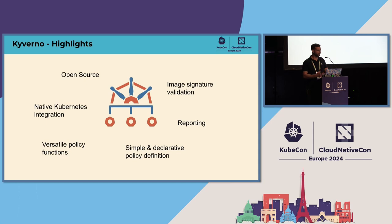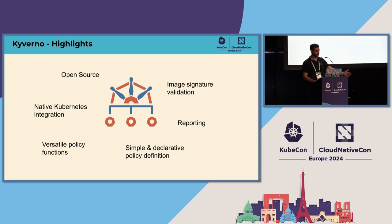Kyverno also has the possibility to do image signature verification. It has rich reporting functionality with a user interface showing which policy validations are passing and which are failing, and you can expose Prometheus metrics. Last but not least, there is a huge community — already 5,000 stars on GitHub — and a large amount of policy examples at kyverno.io/policies with predefined policies for every use case.